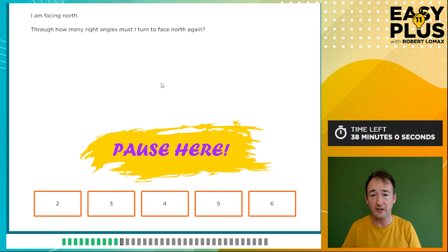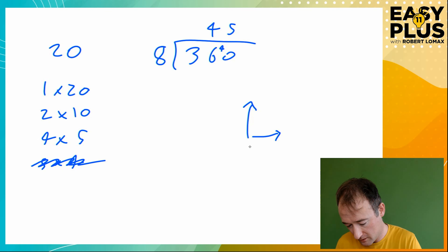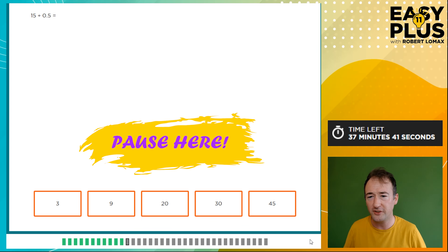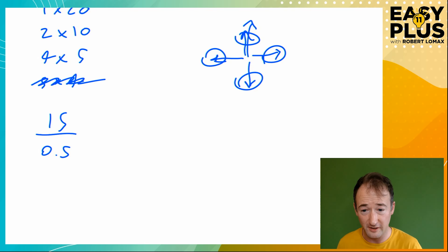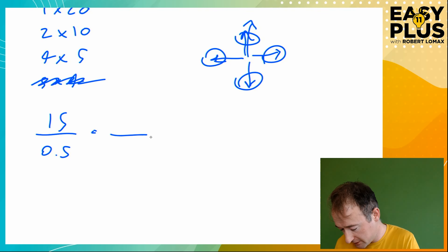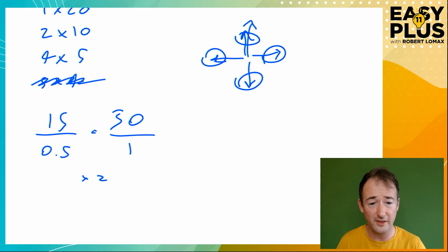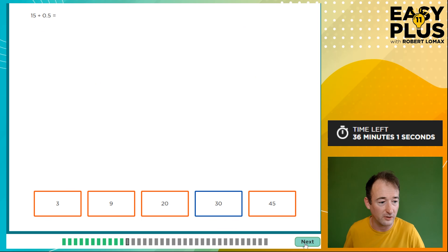I'm facing north — through how many right angles must I turn to face north again? One right angle I'll be facing east, another south, another west, and then back facing north. That's four right angles. Next: 15 divided by 0.5. Always good to write it as a fraction. 15 divided by 0.5 — to convert to a whole number denominator we double both top and bottom: 15 times 2 is 30, over 1. Or multiply top and bottom by 10 to get 150 over 5, then divide to get 30. So the answer is 30.